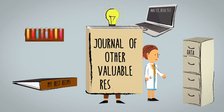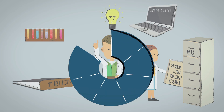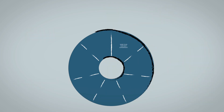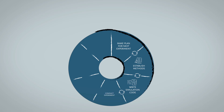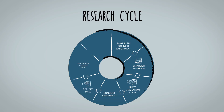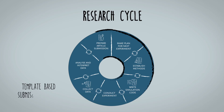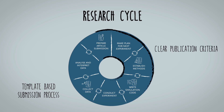Elsevier has developed a range of online article types that let researchers publish the results of their work from different stages of the research cycle. The template-based submission process is simple and the publication criteria are clear, making it easy for a scientist to get recognition.